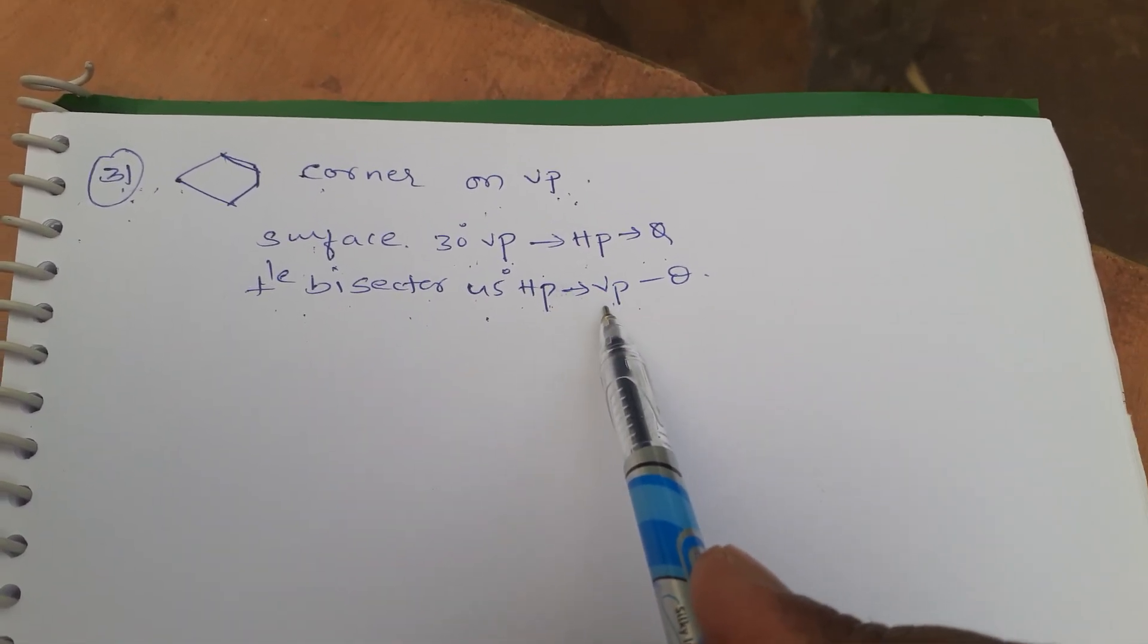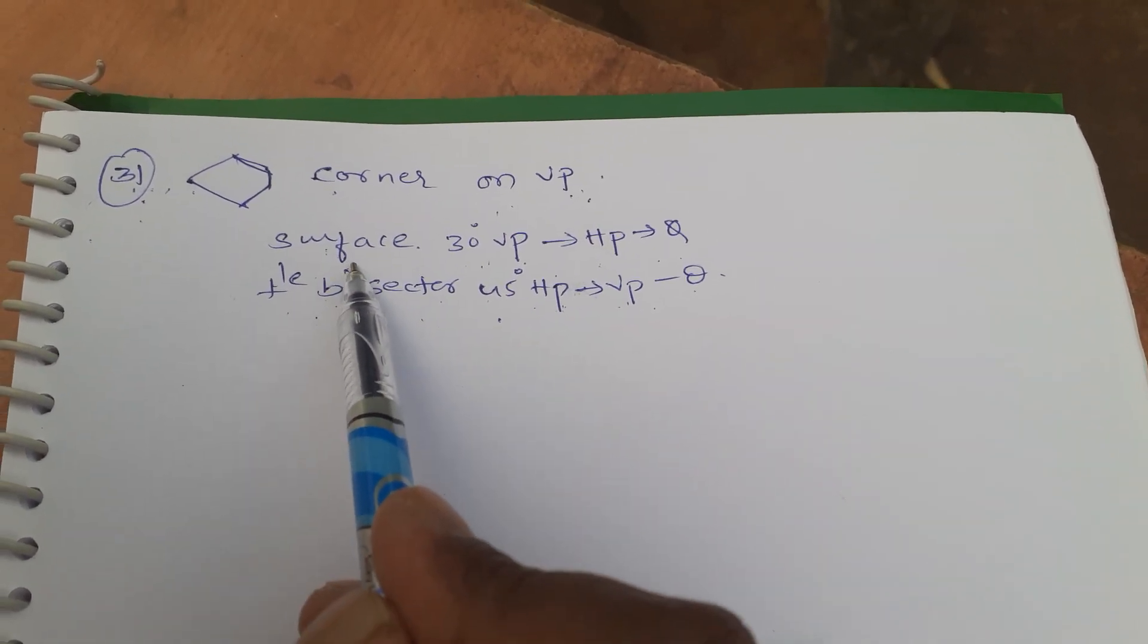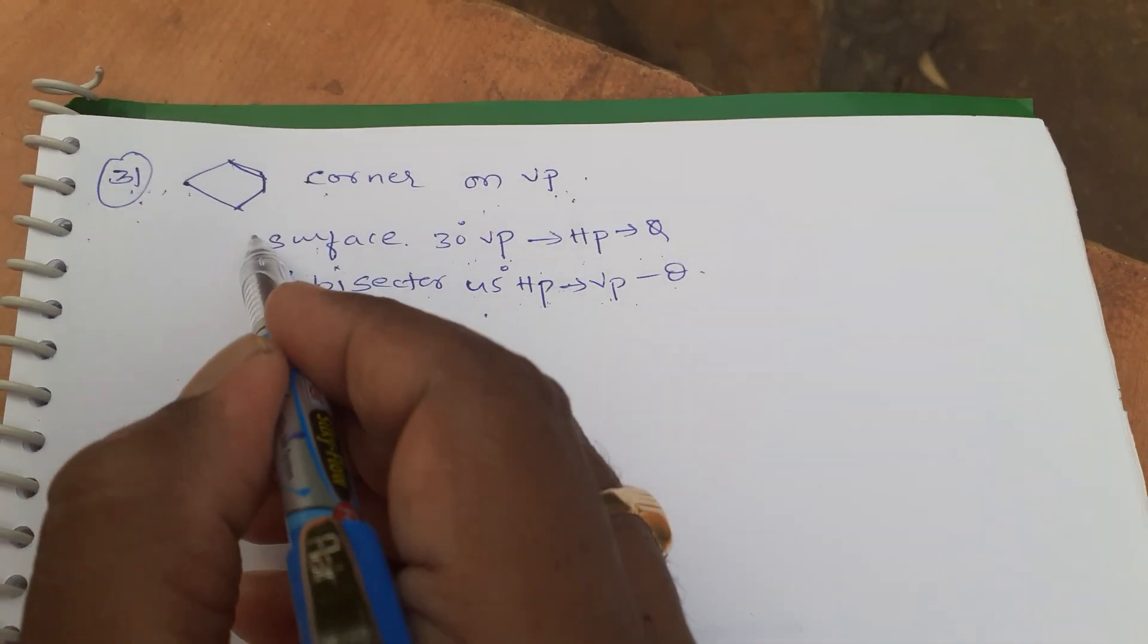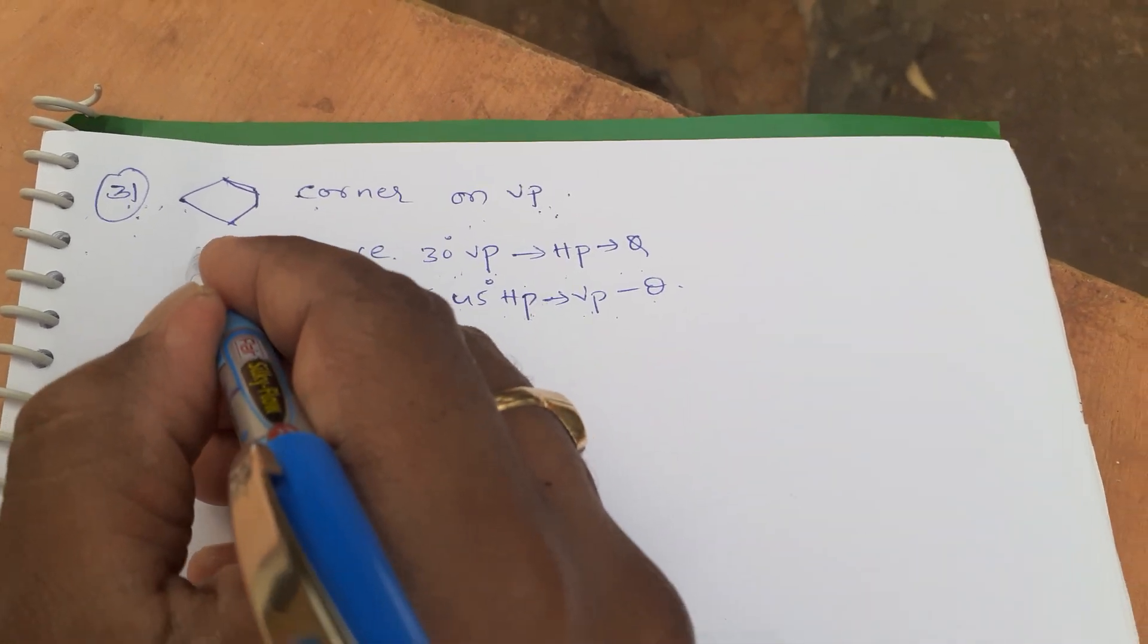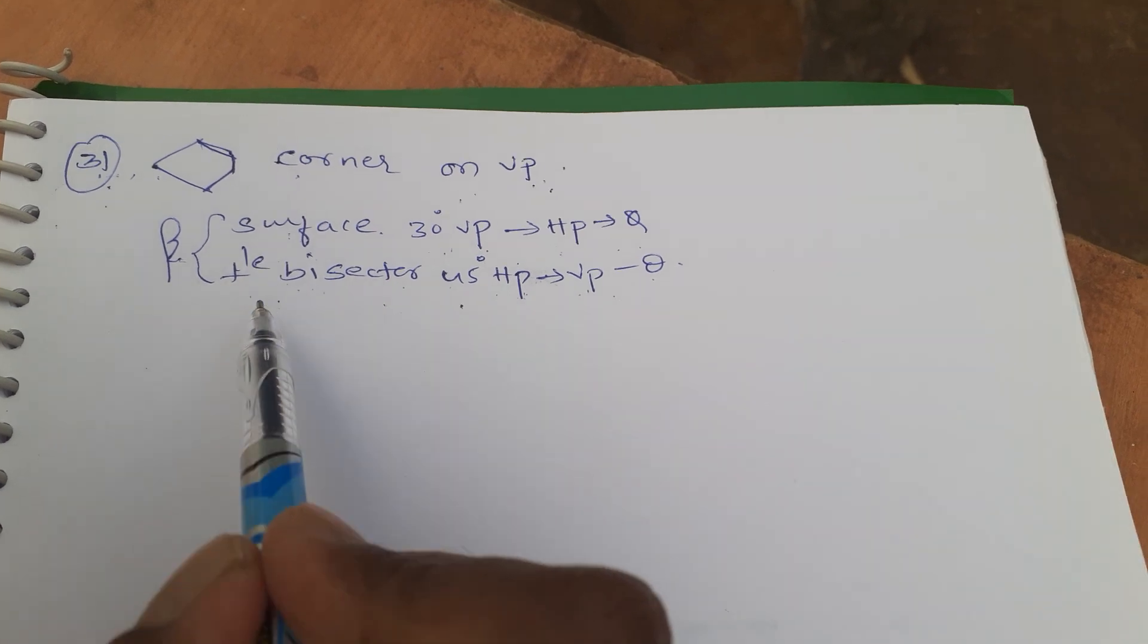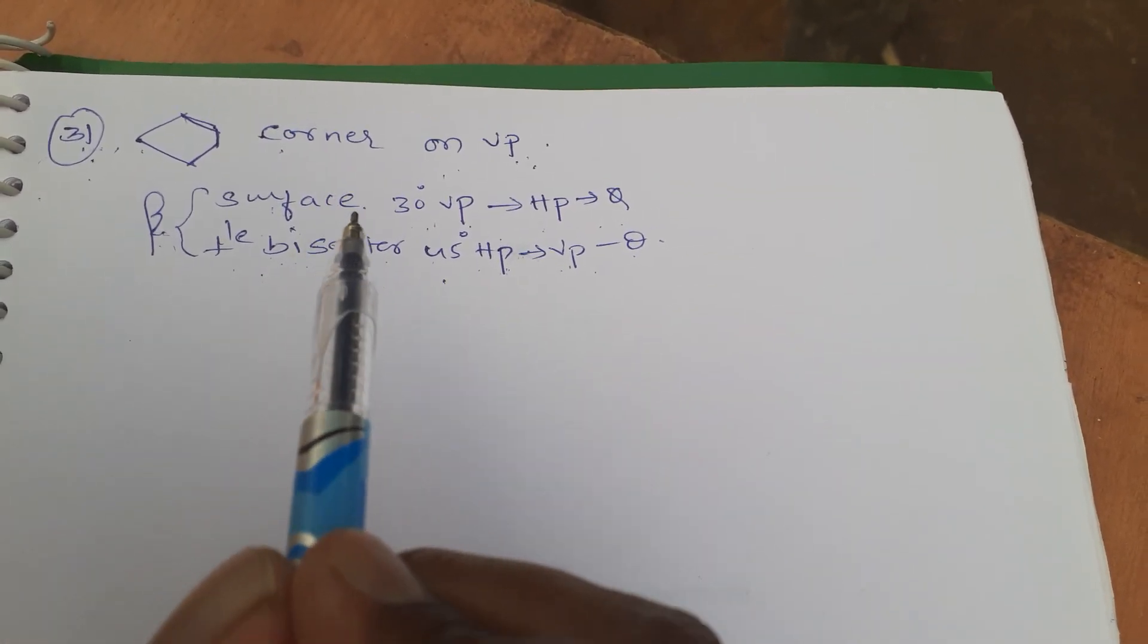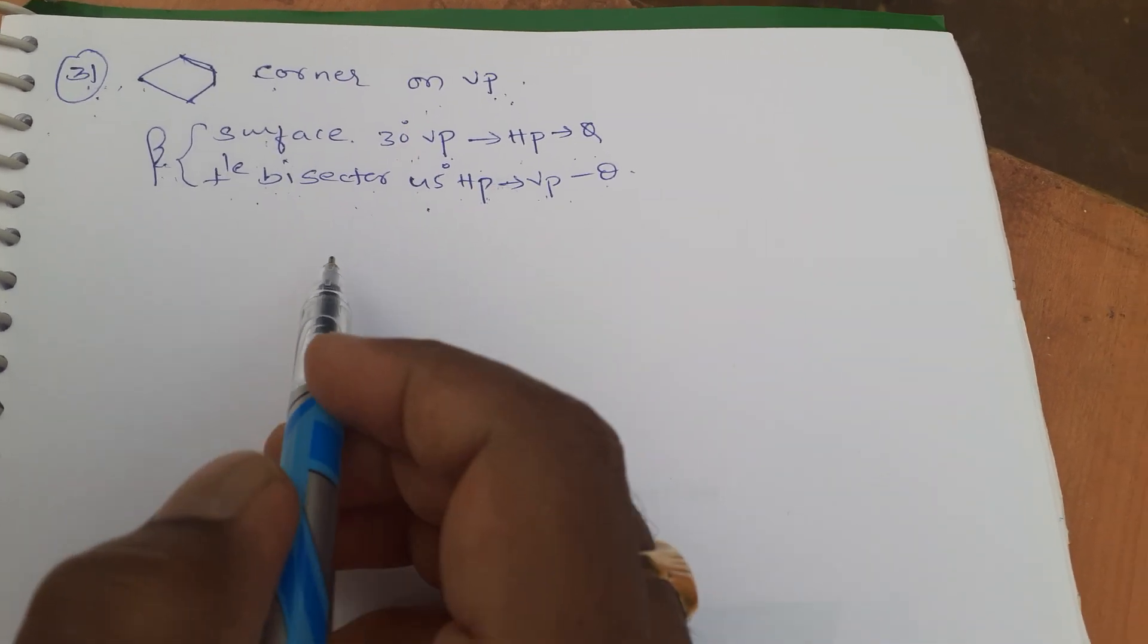HP means VP, VP means theta. You know that there is no edge or side making an angle, that's why we are going to consider a beta angle even though there is no apparent edge. It is a very easy problem.